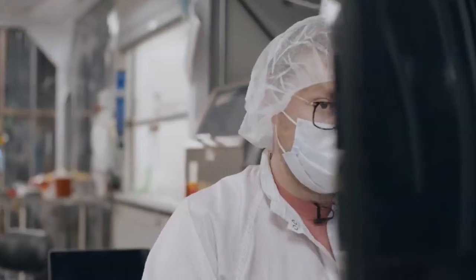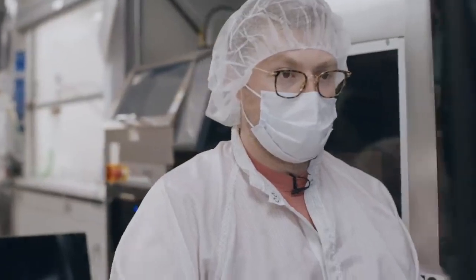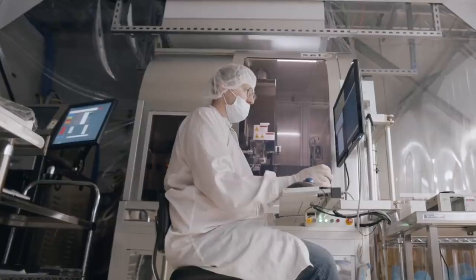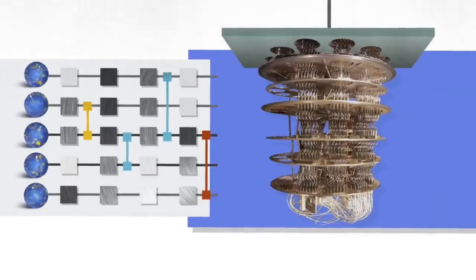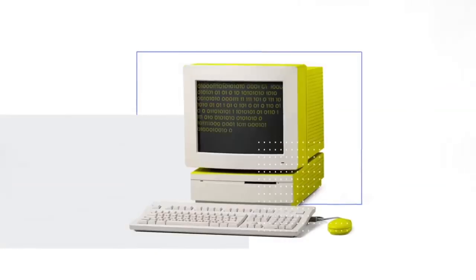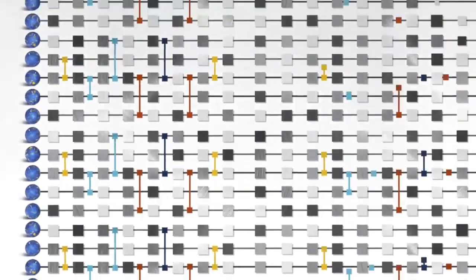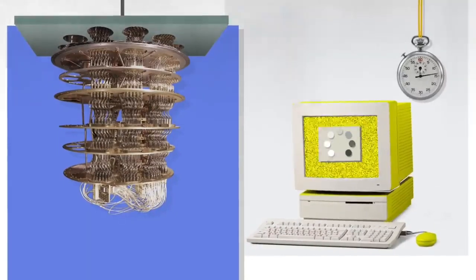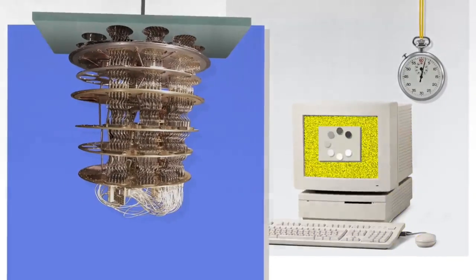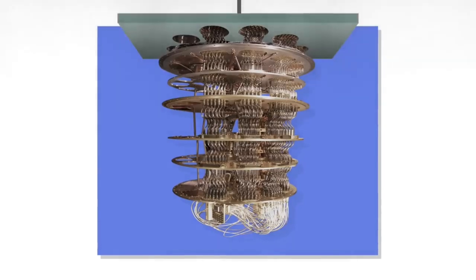The nice thing about quantum supremacy is that it's a very well-defined engineering milestone. What we're trying to do is have experimental quantum computers surpass the best supercomputers in the world. To demonstrate quantum supremacy we have three steps: first, pick a circuit; second, run it on the quantum computer; third, simulate what the quantum computer is doing on a classical computer. We gradually increase the complexity of that circuit until it becomes completely impossible for the classical computer to keep up — then we say we've achieved quantum supremacy.